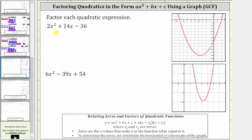For the first example, we have two x squared plus 14x minus 36. To factor this using a graph, we graph the quadratic function y equals two x squared plus 14x minus 36, which I've already graphed here on the right. Notice how the graph has two distinct horizontal intercepts, and therefore the function has two distinct zeros. The ordered pair for one horizontal intercept is negative nine comma zero, and the ordered pair for the other is two comma zero.